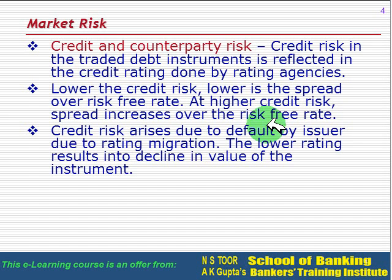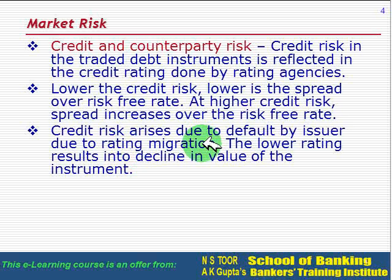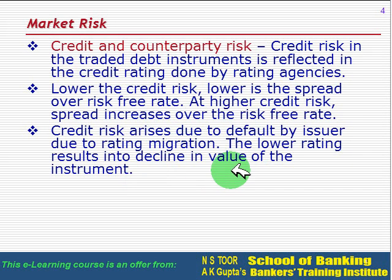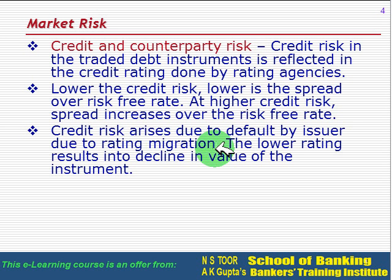How does credit risk arise? Credit risk arises due to default by the issuer and due to rating migration. A lower rating results in a decline in the value of the instrument. For example, if a bond rated Triple-A is subsequently rated Double-A, it reduces the value of the instrument. If the rating goes from Double-A to single-A, there can also be some problem of default.